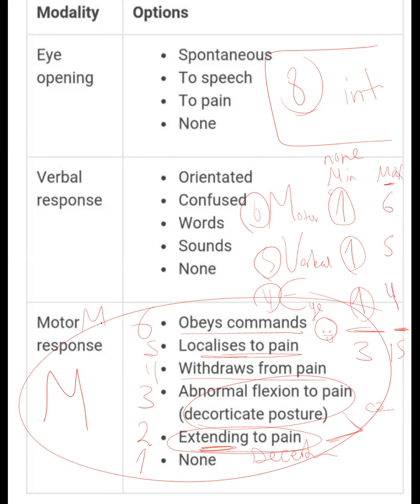Regarding verbal scoring, the maximum is five. If the patient is oriented to time, place, and person, they take five. If the patient is confused — saying 'I don't know, where are we' — they are not oriented and will take four.